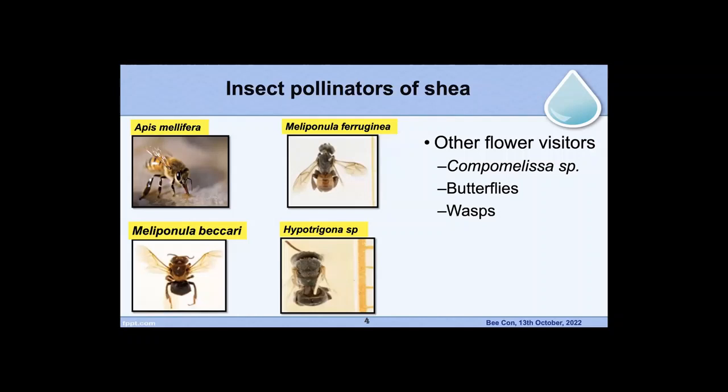Most of the insects that pollinate are Apis mellifera. The rest are stingless bees: Meliponula buccari, Meliponula ferruginea, and Hypotrigona species. These are the major pollinators. There are other flower visitors which we are not sure how much they contribute to pollination — these are Caenomisa, which is a solitary bee, then some butterflies and some wasps.